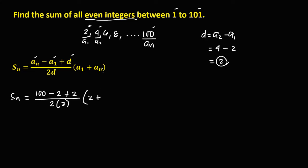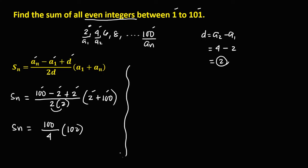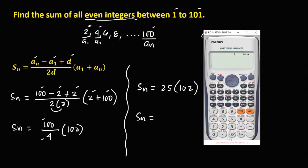So we have plus 2, over 2 times the common difference 2, times the quantity a sub 1 plus a sub n, which is 2 plus 100. Simplifying: 100 minus 2 is 98, and 98 plus 2 is 100, over 4, times 102. That gives us 100 divided by 4 equals 25, then 25 times 102 equals 2550. The total sum of all even integers between 1 and 101 is 2550.